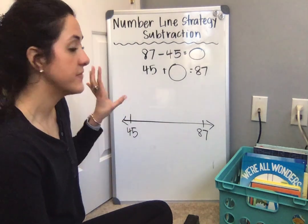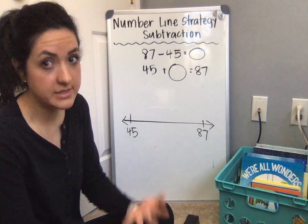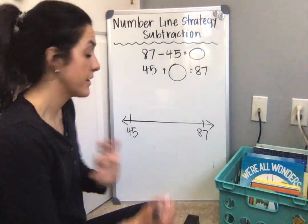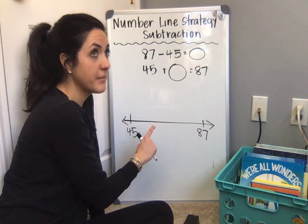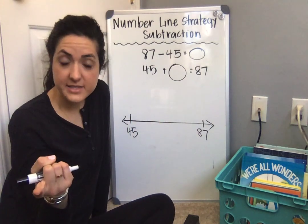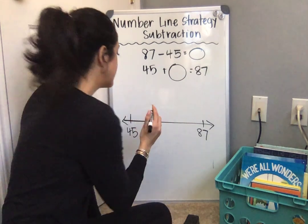I want to find a friendly number first. Friendly numbers make it way easier to add, way easier to jump on the number line. So I'm going to get to a friendly number. Now, I'm at 45, and I want to jump up to the closest friendly number. Do you know what the closest friendly number is? I'll give you a second to think about it.